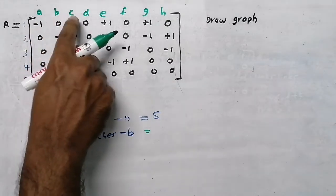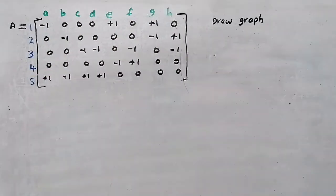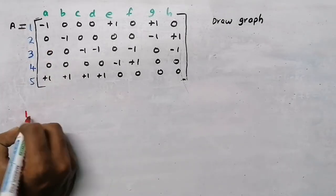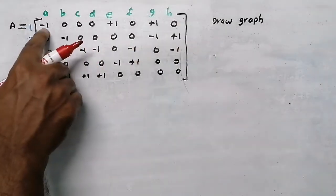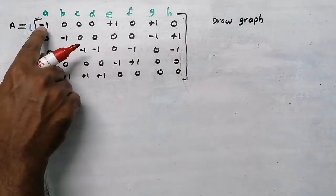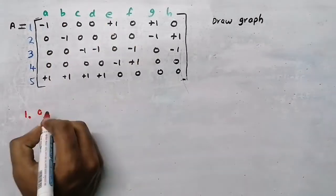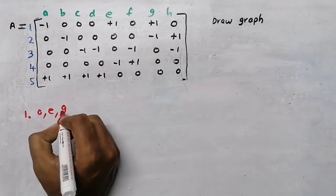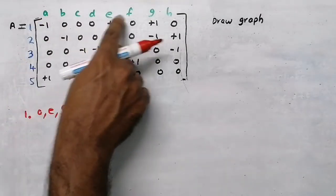There are 8 branches. Now I am going to take the first node - node 1. Look at the row here: there is a 1 here, there is a 1 here, there is a 1 here, remaining are zeros. So here there is 1 that is branch a, here it is 1 that is branch e, here it is 1 that is branch g. So at node 1, three branches are there: a, e, and g.